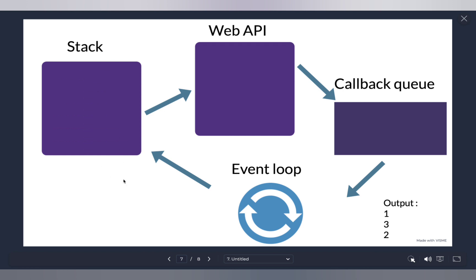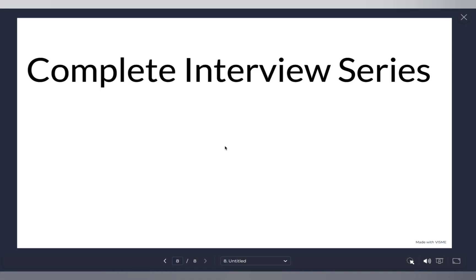Let's quickly revise what we just learned. If there is any asynchronous code — say `setTimeout` — it comes to the stack, which says 'I can't execute this' and pushes it to the Web API. The Web API waits for the required time and then pushes the callback to the callback queue. The event loop constantly checks if the stack is empty, and if it is and there's a callback, it pushes it onto the stack for execution. If something else is already executing in the stack, the event loop waits.